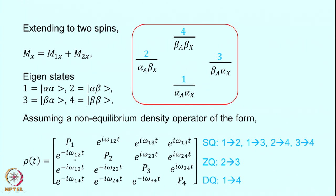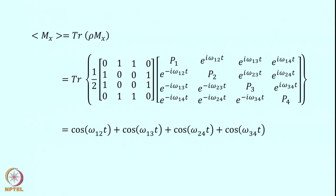Now we calculate the trace of mx with this density operator. Recall the mx operator for a two-spin case is the 4×4 matrix with elements representing the single quantum coherences. These elements represent single quantum coherences 1-2, 1-3, 2-4, and 3-4 along with their respective symmetrical elements. We now multiply this with the density operator.